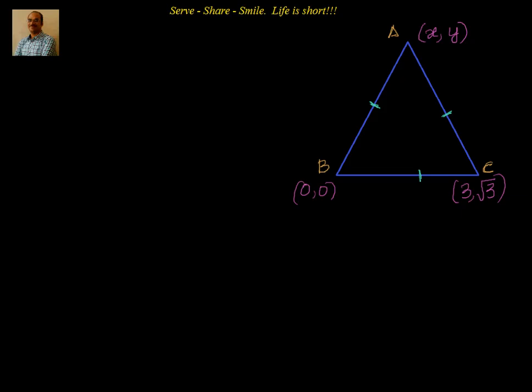We have been given an equilateral triangle ABC. We have been given two points — those are vertices B and C — and their coordinates: one is (0, 0) and the other is (3, √3). We have to find out the third coordinate, so let us say that is equal to (x, y).